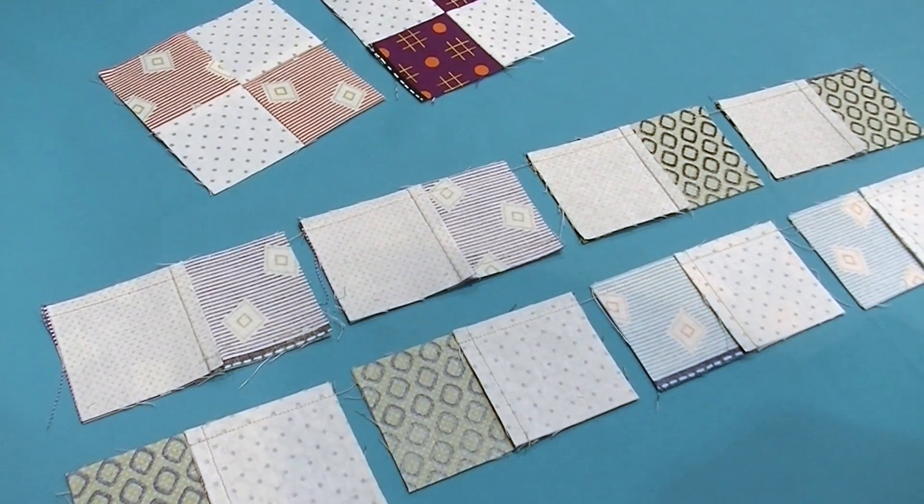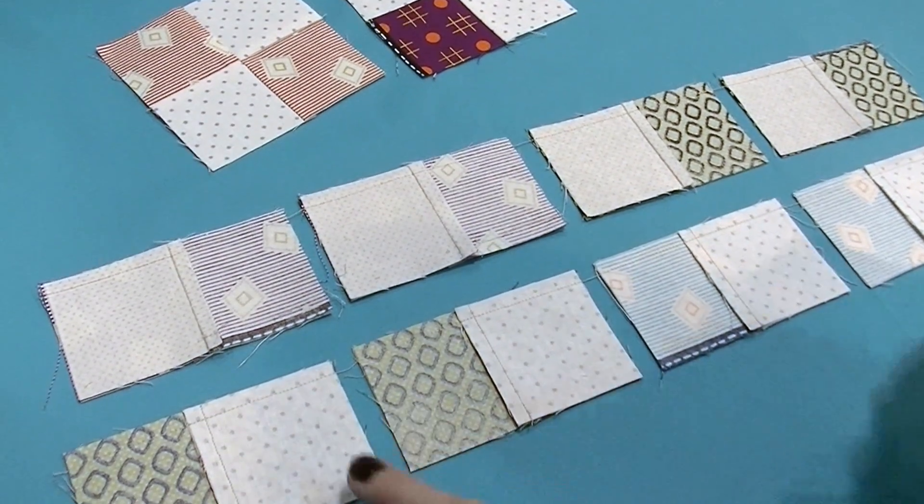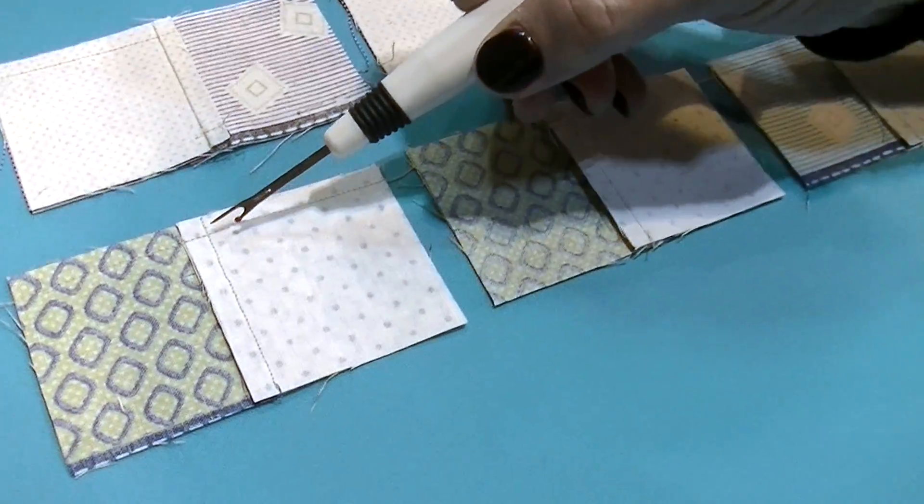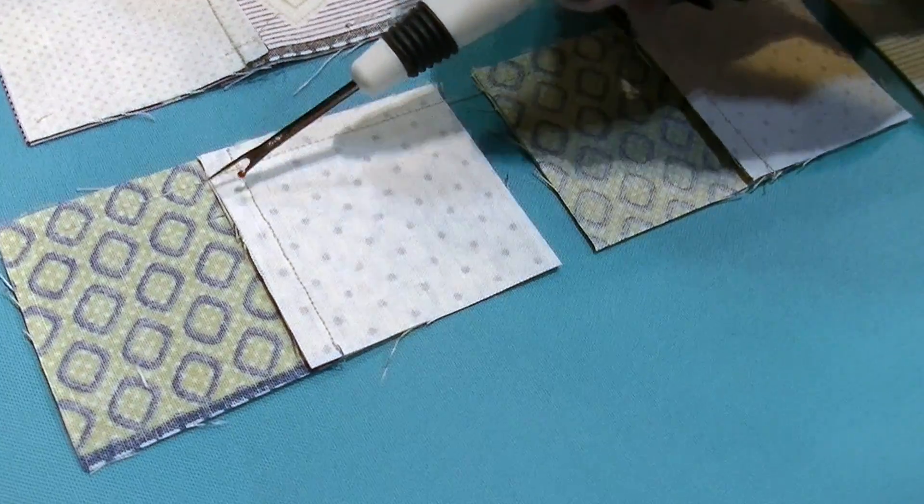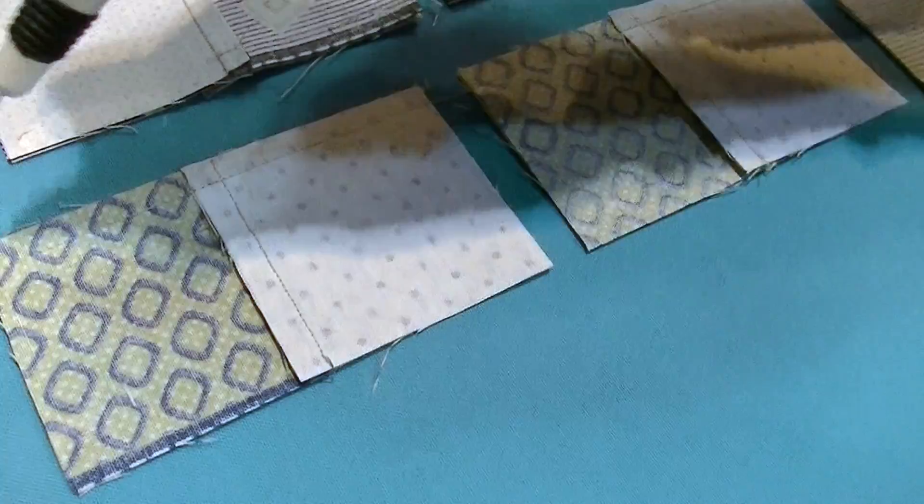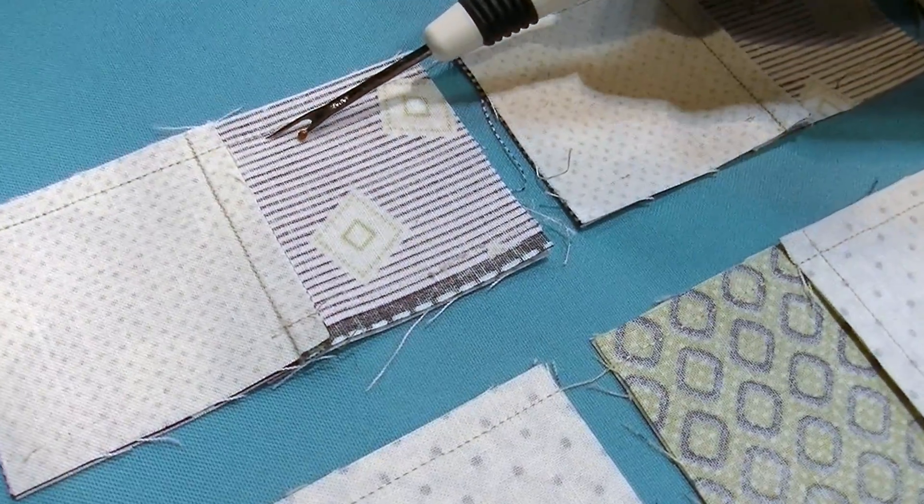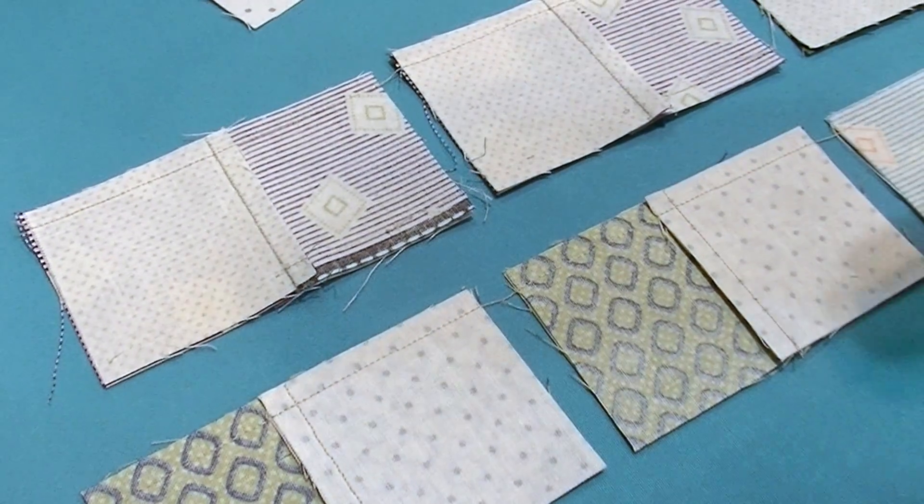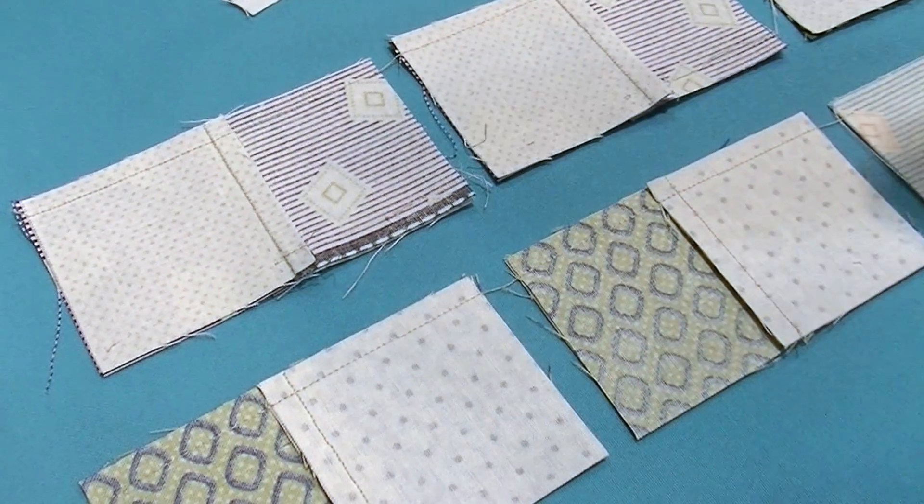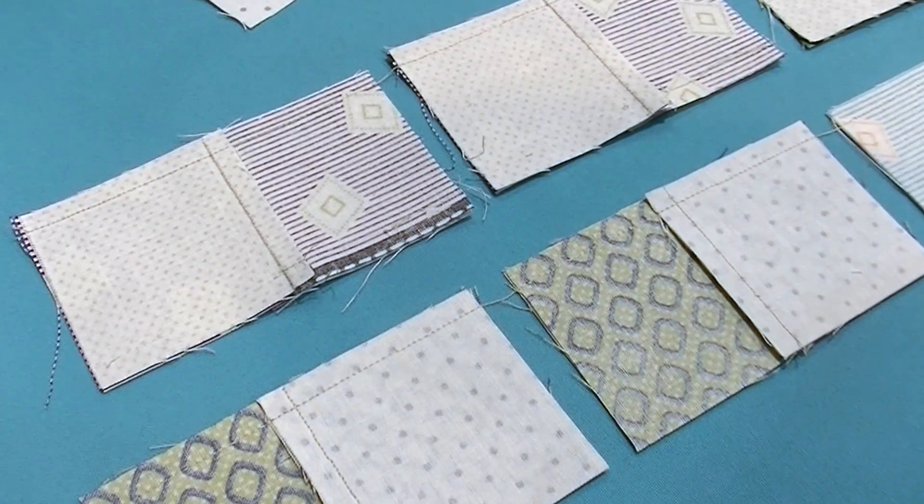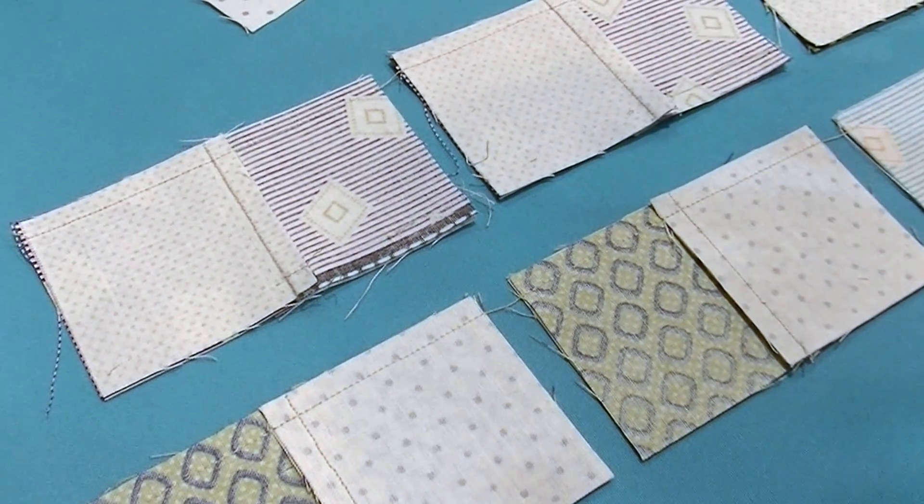You can sew with your seams facing towards you as you're sewing from this direction, or you can be stitching with the direction the feed dogs are going to be pulling the fabric, moving it through the machine, and the presser foot on top is giving it a little bit of a push.